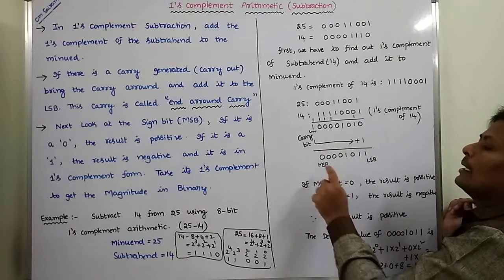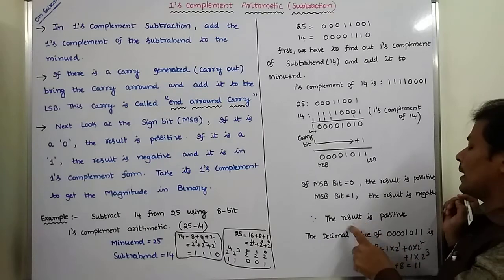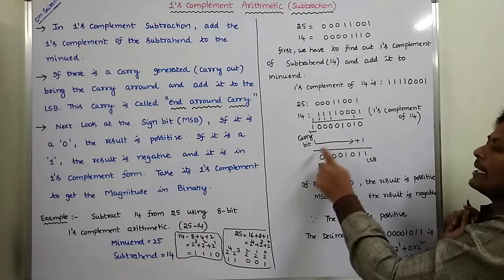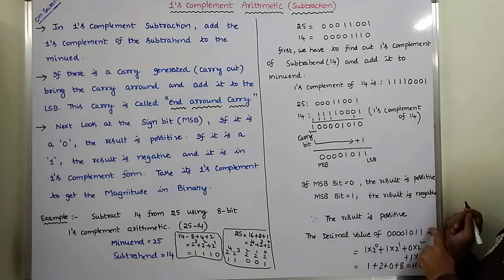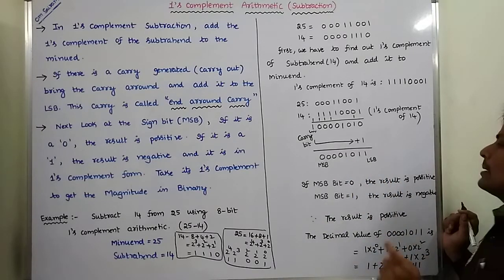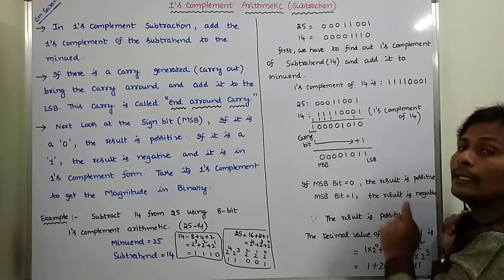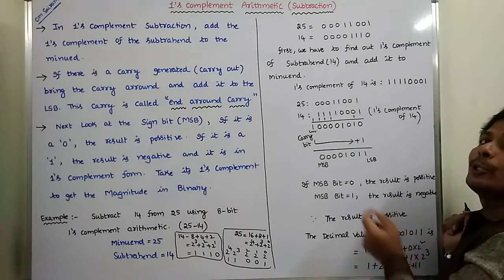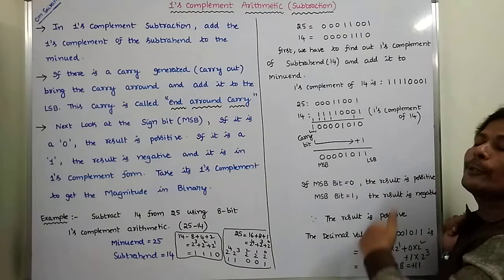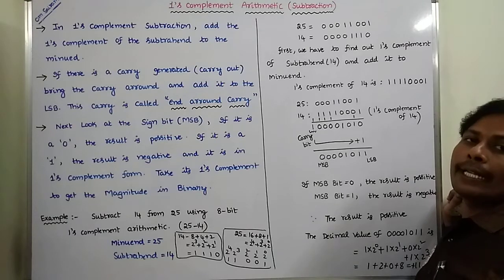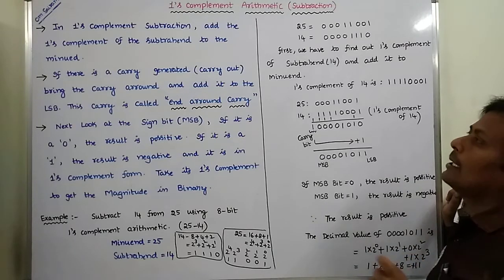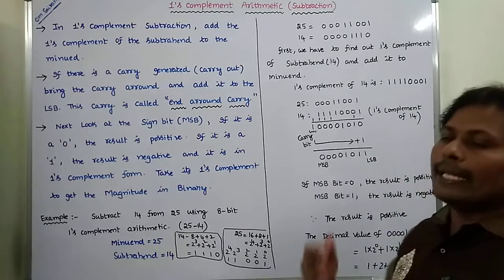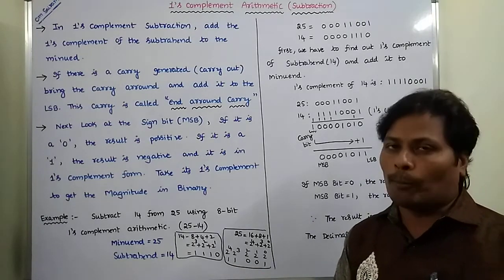After getting the result, we observe the MSB bit. If the MSB bit is equal to 0, the result is positive. If the MSB bit is equal to 1, the result is negative. In this result, the MSB bit is equal to 0, so the result is positive. The decimal value of this binary number is 11. Suppose if the MSB bit is equal to 1, the result is negative and is also in One's Complement form. To get the magnitude, we perform One's Complement again to get the normal value. In the next video, we will solve some example problems.